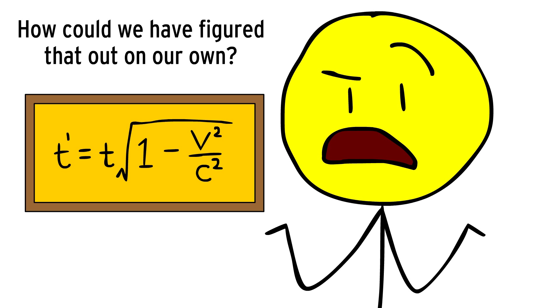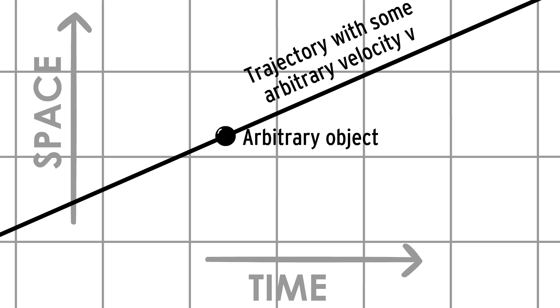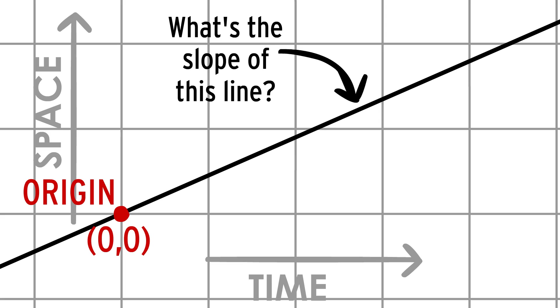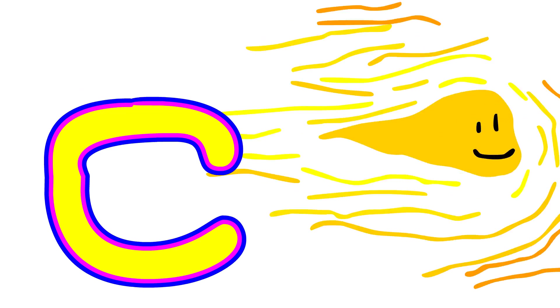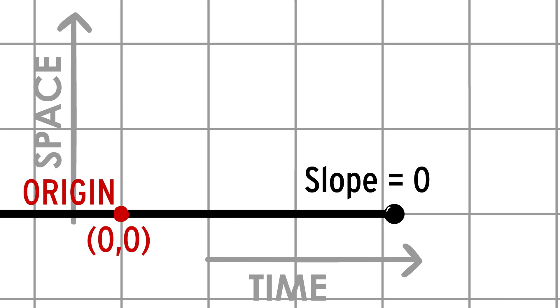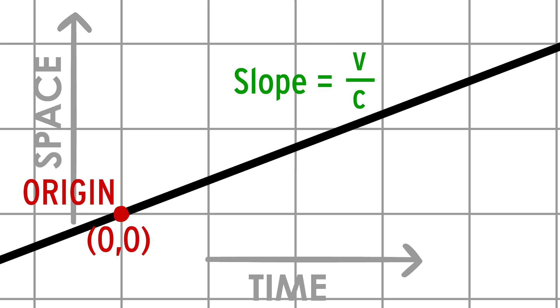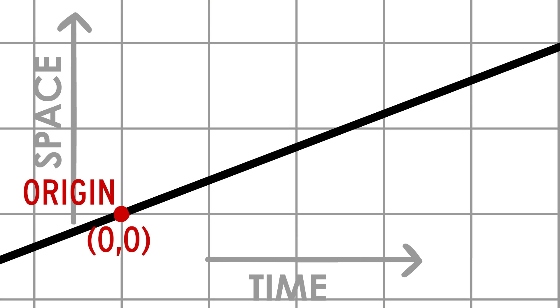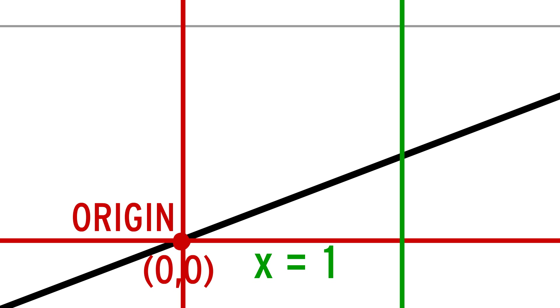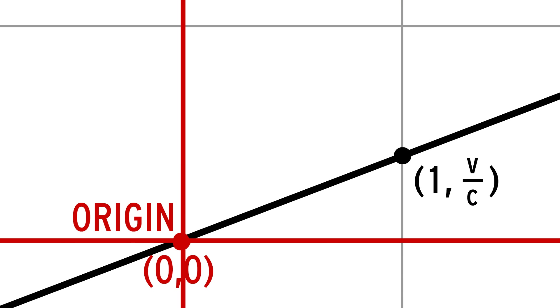How could we have figured that out on our own? Well, let's graph some arbitrary object going at some arbitrary velocity V, like this. To make things easier, let's put the origin on the path as well. What's the slope of this line? Well, if the object is going at light speed C, then the slope of the line is 1. If the object's not moving, then the slope is 0. So you can see that the slope is just how fast you're going relative to the speed of light. In other words, the slope is V over C. Slope is rise over run, so at the x-coordinate of 1, the y-coordinate must be the slope, V over C. Simple enough. Therefore, our point is 1, V over C.